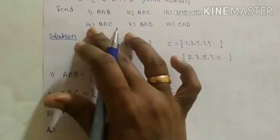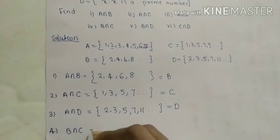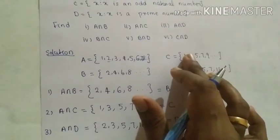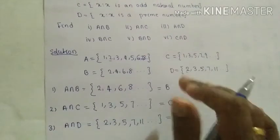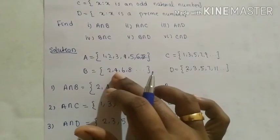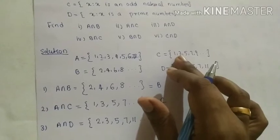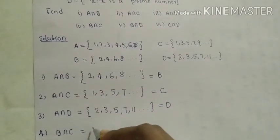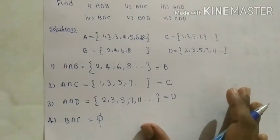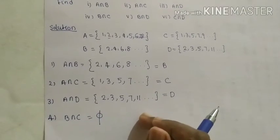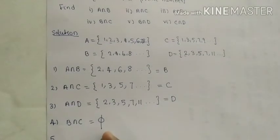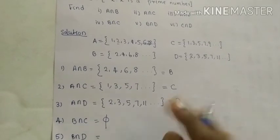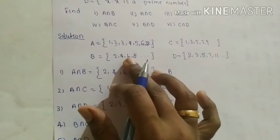The fourth one is B intersection C. B is the set of all even natural numbers and C is the set of all odd natural numbers. No element is common in both B and C, so we write phi. Therefore B and C are disjoint sets.